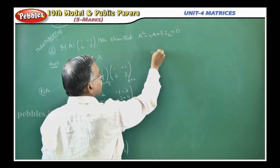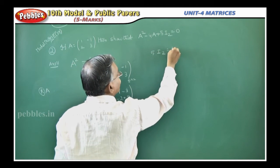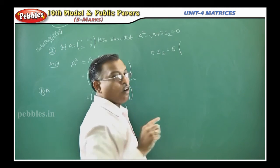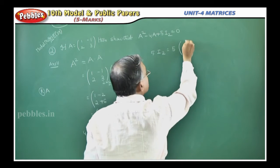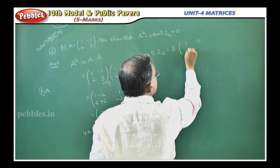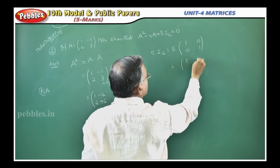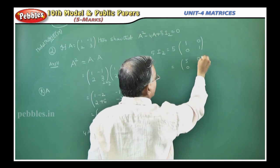Next 5I2, 5 into what is I2? Identity matrix of order 2. What is identity matrix of order 2? 1, 0, 0, 1. You multiply with 5, it becomes 5, 0, 0, 5.